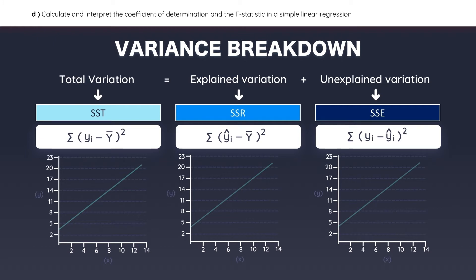To calculate the sum of squares total, the first thing you need to do is identify the actual Y values. Then you need to calculate the average of the Y values — in this example, the average Y value is 12.6. Next, you need to calculate the differences between each Y value and the average. If you square each of these differences and add them together, that's how you calculate the sum of squares total.